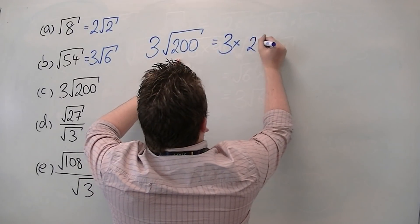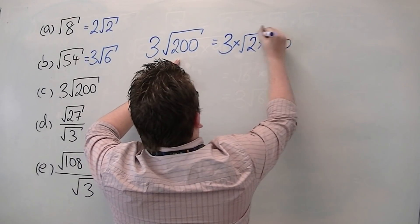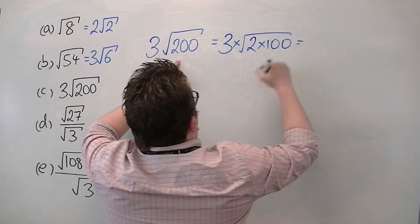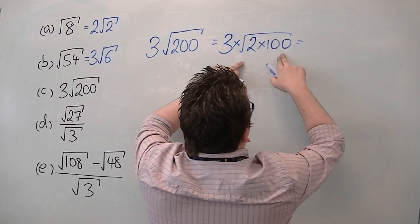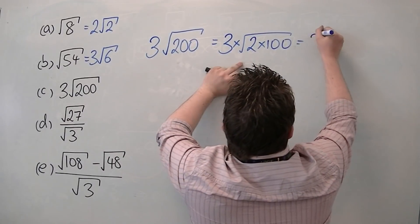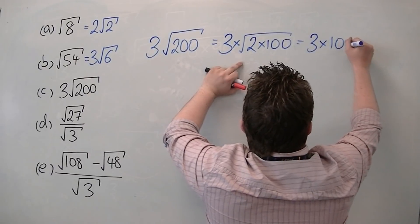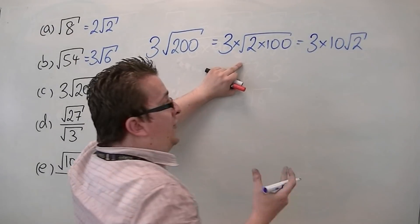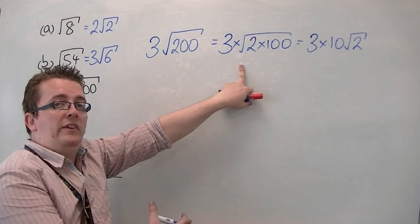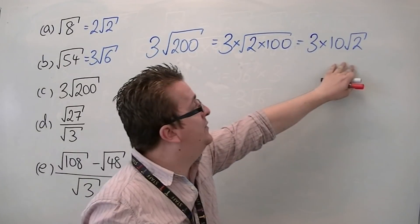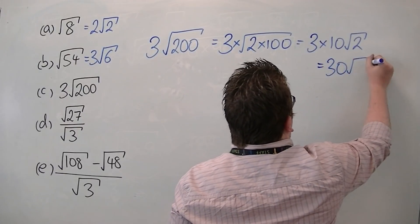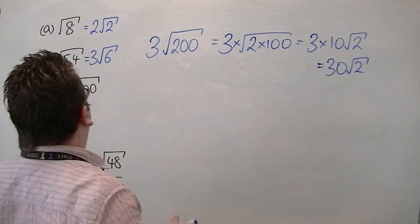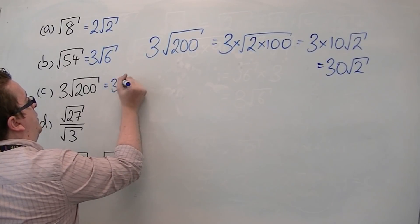And then say, well, that's 3 times root 2 times root 100. Square root of 100 is 10, so we've got 3 times 10 root 2 there. So I've skipped a step there from the previous example. So you should be able to get to 3 times 10 root 2, which you could then write as 30 root 2. So this simplifies to 30 root 2.